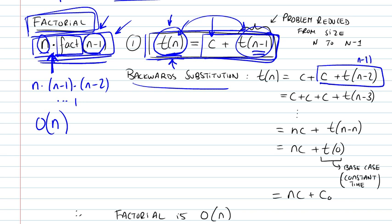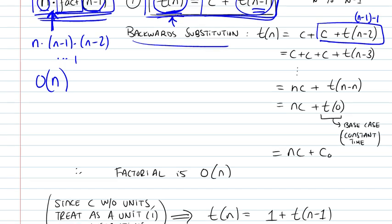So your n minus 1 will be your new n, and then minus 1, so minus 2. And you keep on doing this backward substitution until you get to the very base case.